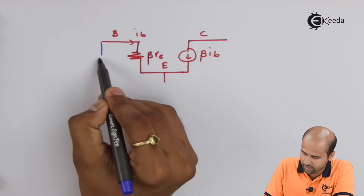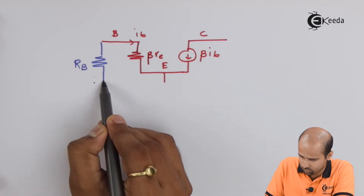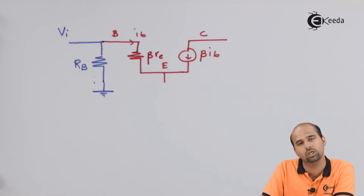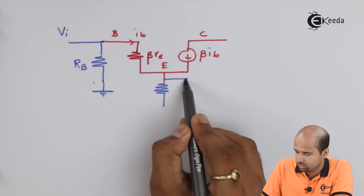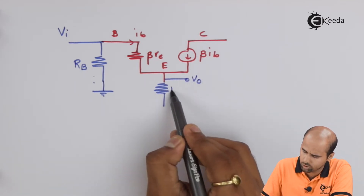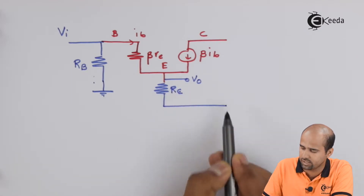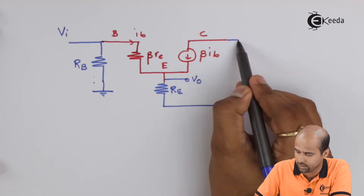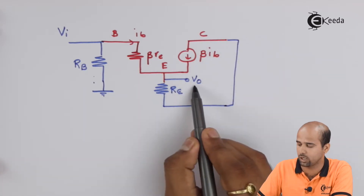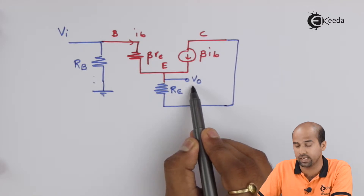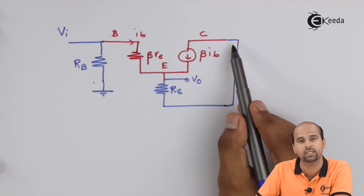We place all peripheral resistances. At the base side we have resistance RB, which is R1 parallel R2, connected to the input AC supply. At the output side we get the output across emitter resistance RE. The emitter is connected to ground, the collector is also connected to ground, so the output is taken across RE at the emitter terminal, and input is at the base terminal. The collector is common to both — that's why it's called common collector.